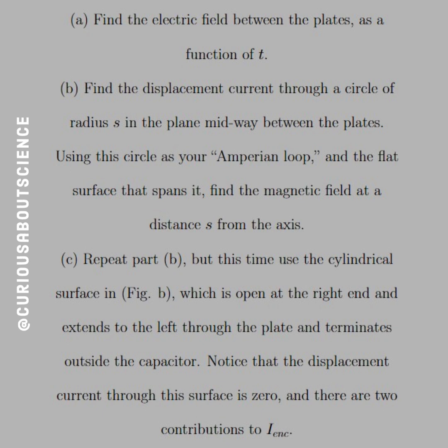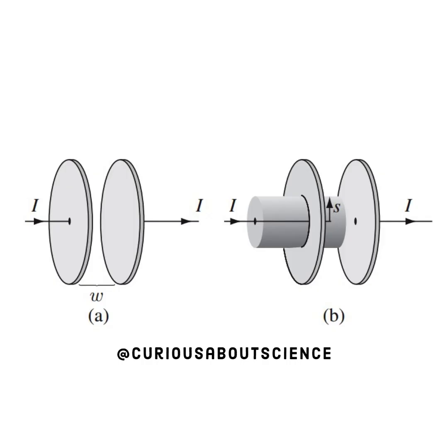Part C, repeat part B, but this time use a cylindrical surface shown in figure B, which is opened at the right end and extends to the left through the plate and terminates outside the capacitor. Notice that the displacement current through the surface is zero and that there are two contributions to I enclosed. All right, so a lot of talk about these diagrams. Let's go check it out.